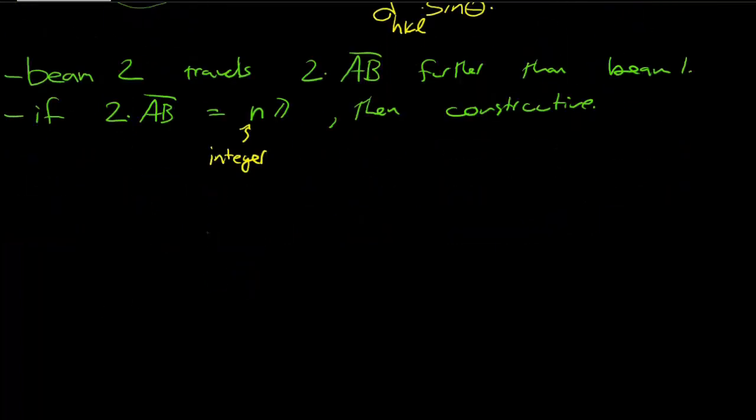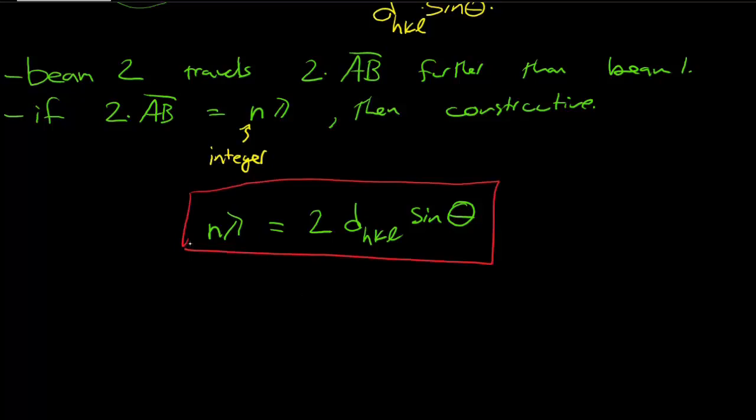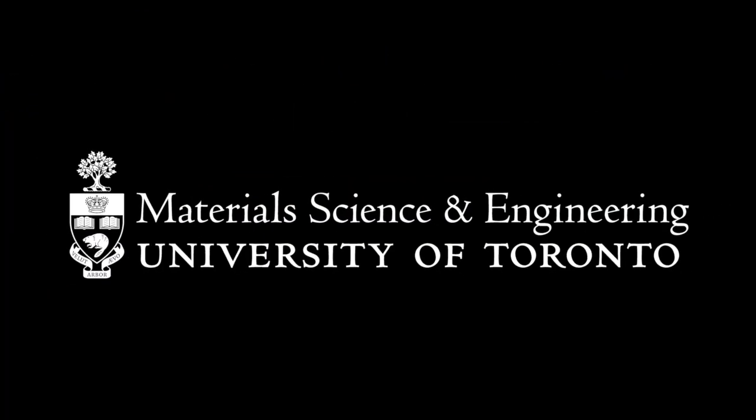So Bragg's law, then, just equates those. It says an integer multiple of the wavelength, nλ, is going to be equal to 2 times AB, which we said was D_HKL sin θ. Fantastic. So that is, in fact, Bragg's law. And it's just based on the condition for constructive interference.